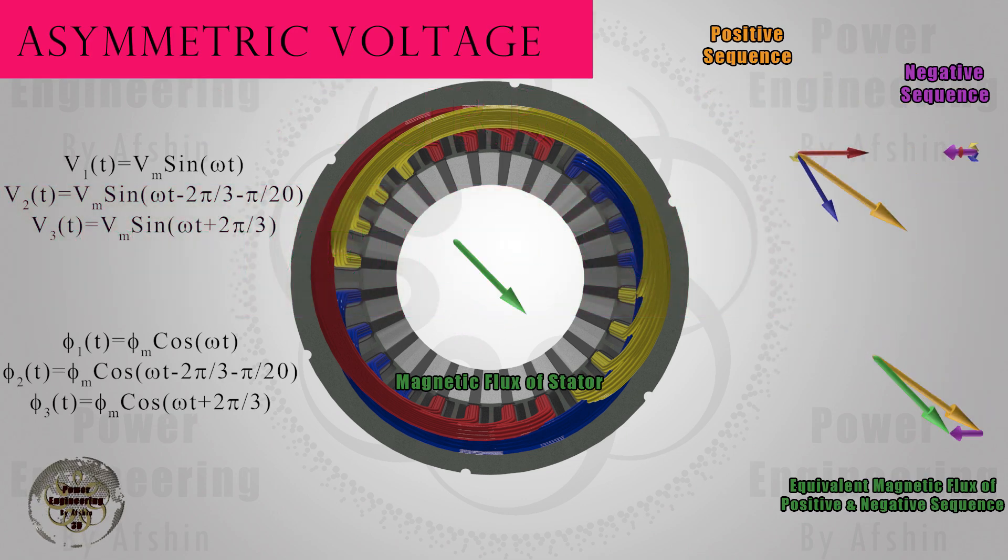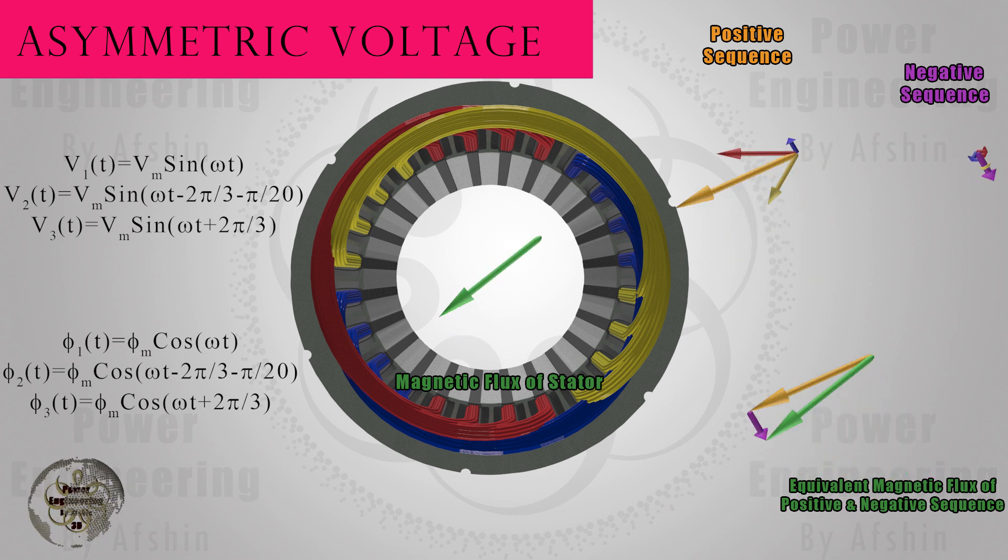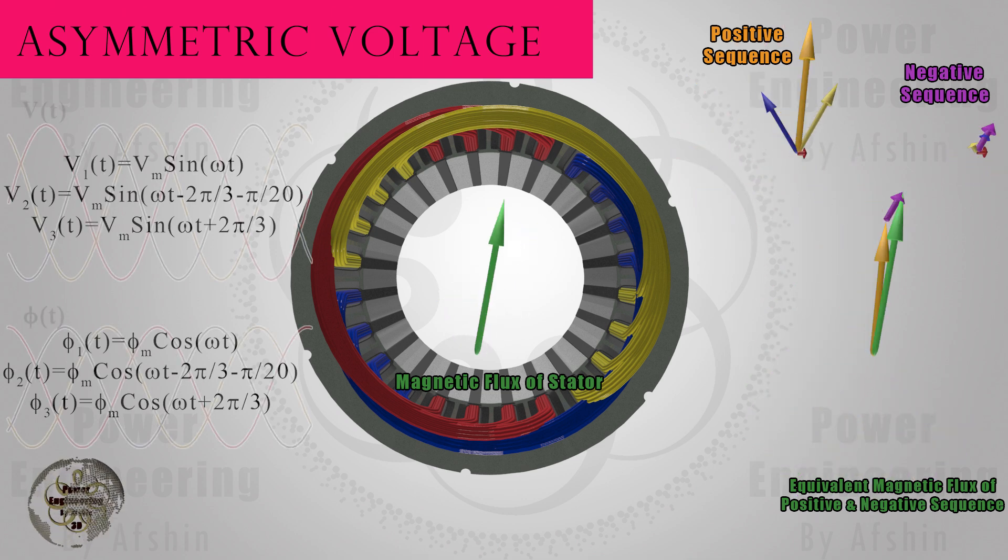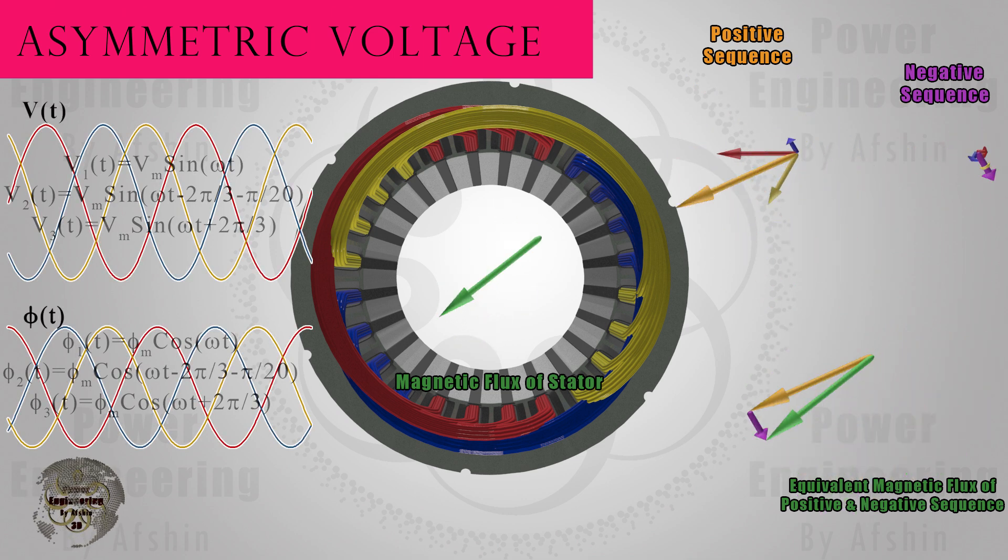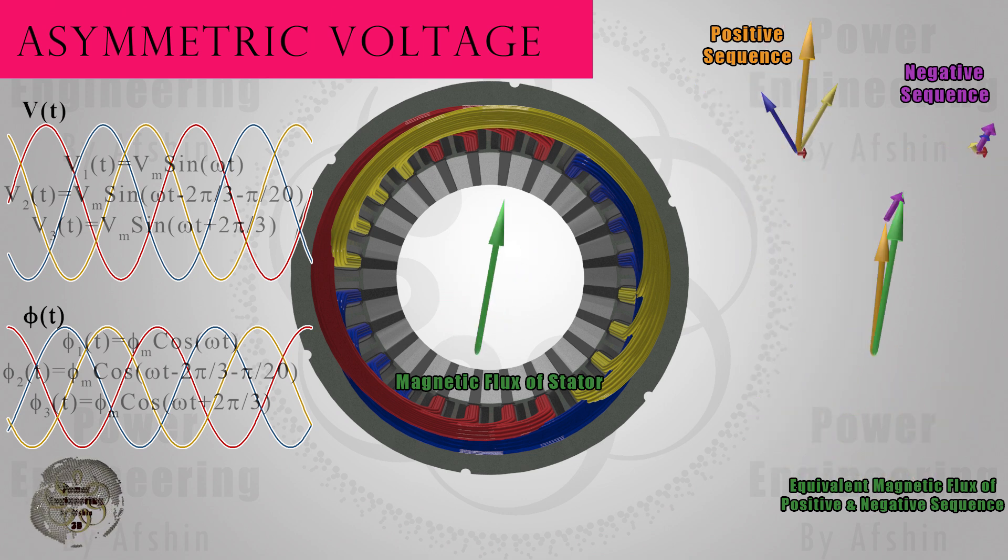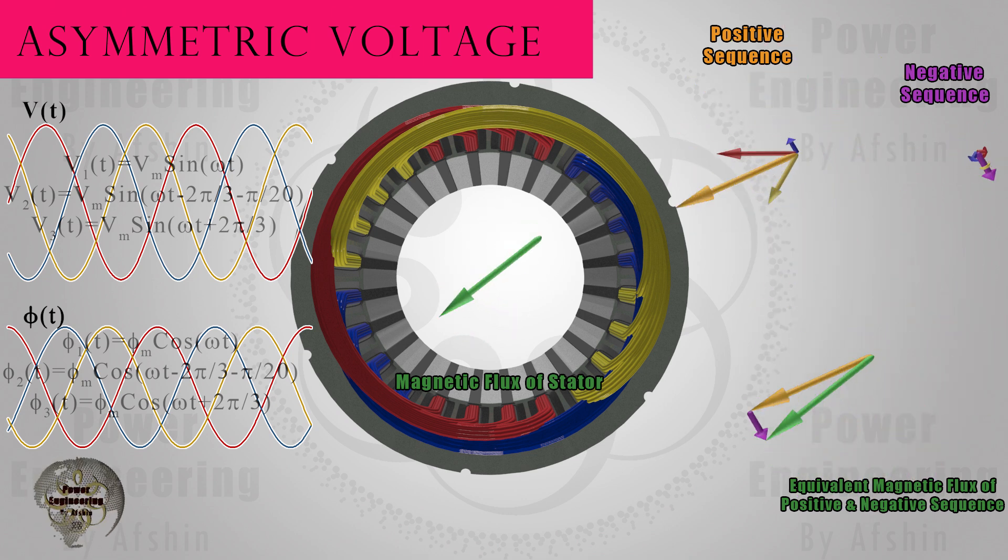Currently, the effect of voltage asymmetry is being investigated. In this section, it is assumed that the voltage magnitudes of the phases are the same, but the second phase is slightly deviated. The rotating field has all three sequences: positive, negative, and zero.